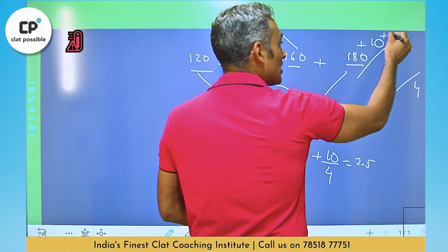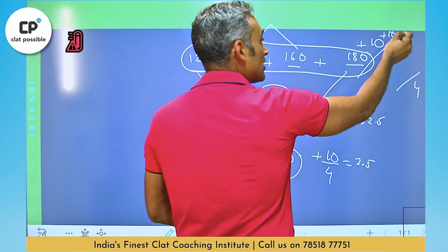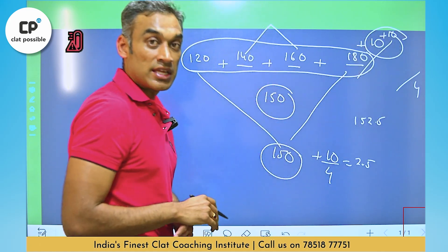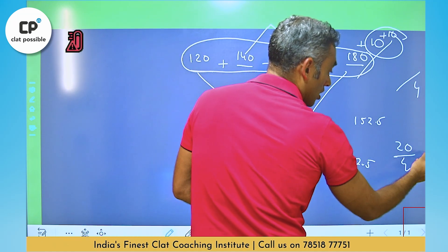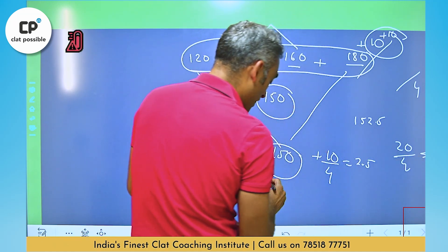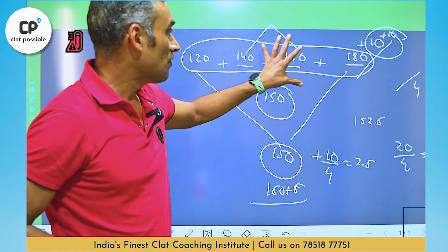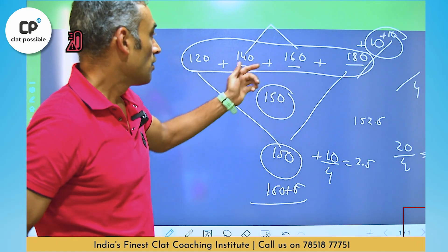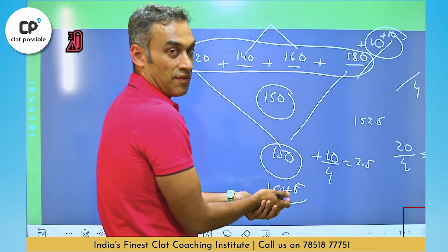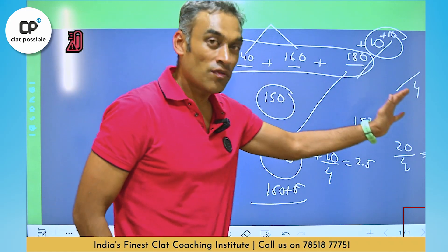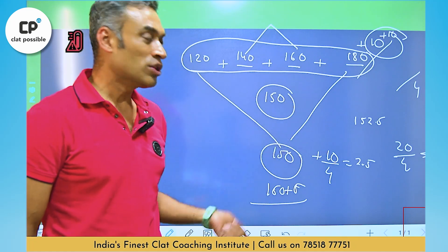Had the last value been 200 instead of 190, the extra would be 20 over the base of 180. That 20 distributed across 4 gives 5, so the average would have been 155. The technique: take a convenient median point, see what the deviations are, distribute the net deviation across the count, and get the answer immediately — instead of adding everything and dividing by 4.